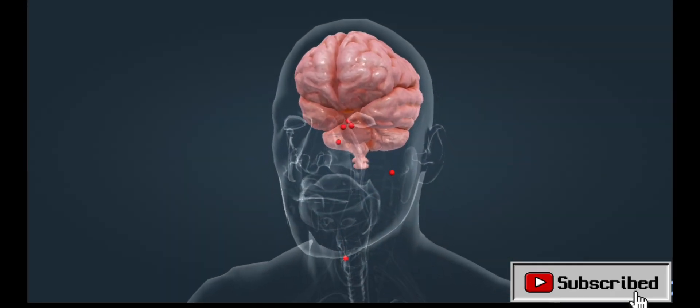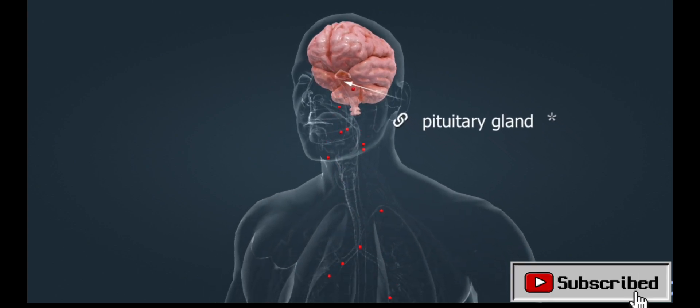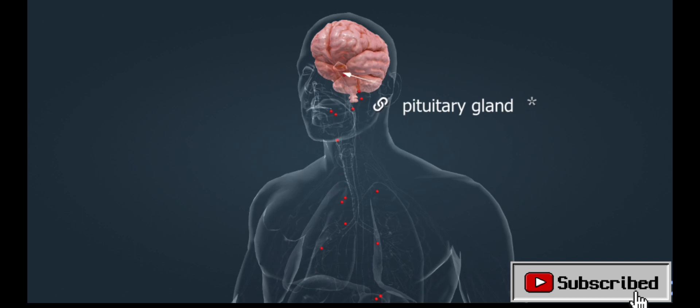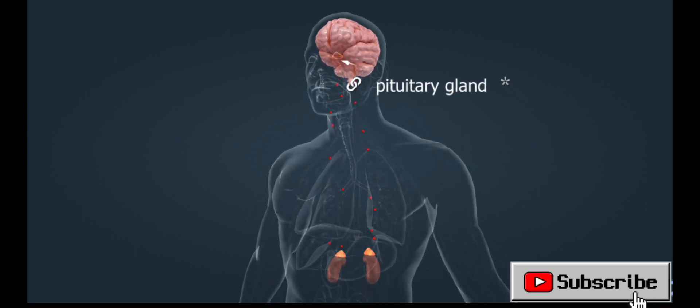The functioning of the adrenal cortex is mainly regulated by the pituitary gland. The hormone secreted by the pituitary gland, ACTH, reaches the adrenal gland via the bloodstream.